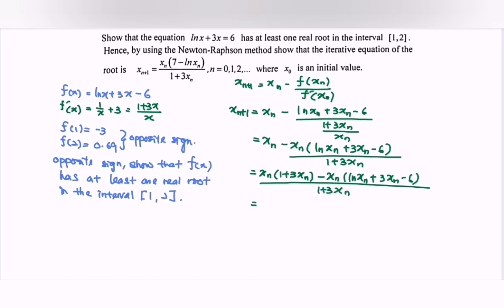So factor out the situation. xₙ[1 + 3xₙ - ln xₙ - 3xₙ + 6] over (1 + 3xₙ).